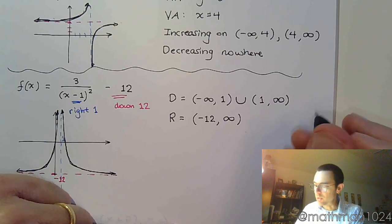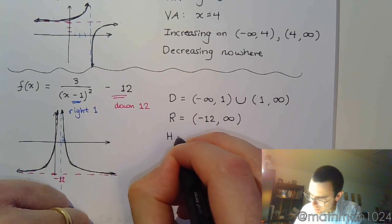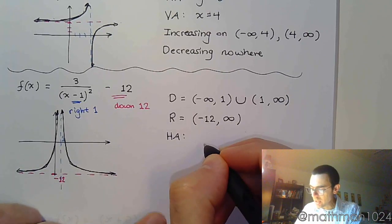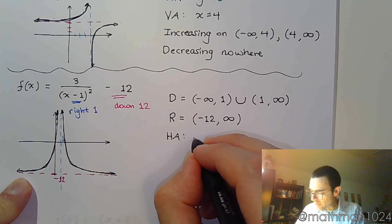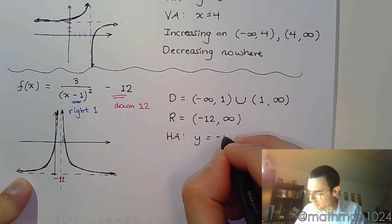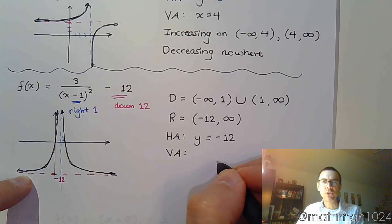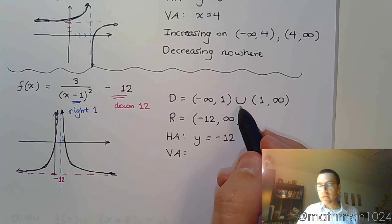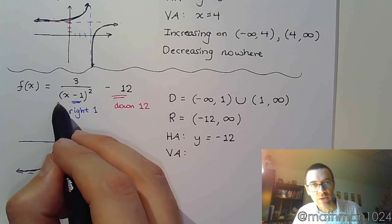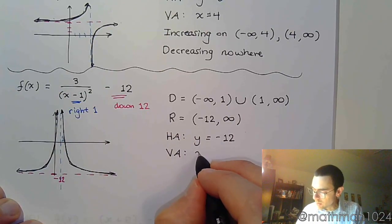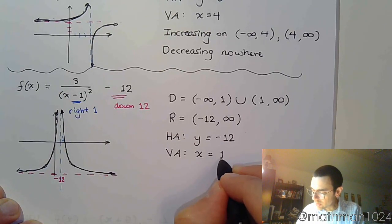Now let's talk about our asymptotes. Your horizontal asymptote, we just mentioned it, is this guy right here. And so that's the equation, y equals negative 12. Your vertical asymptote, again, corresponds to where you have that blip in your domain. It corresponds to what makes that denominator equal to 0, which is x equals 1.